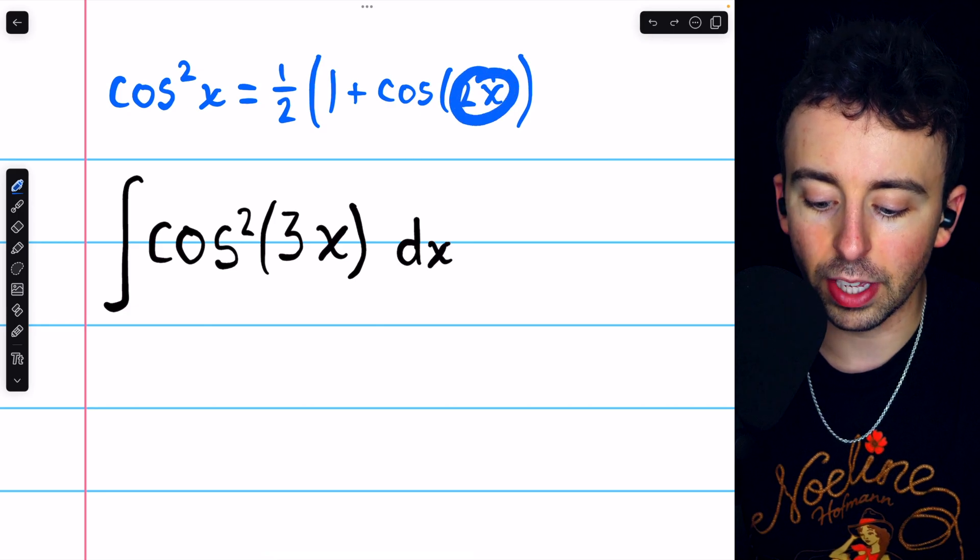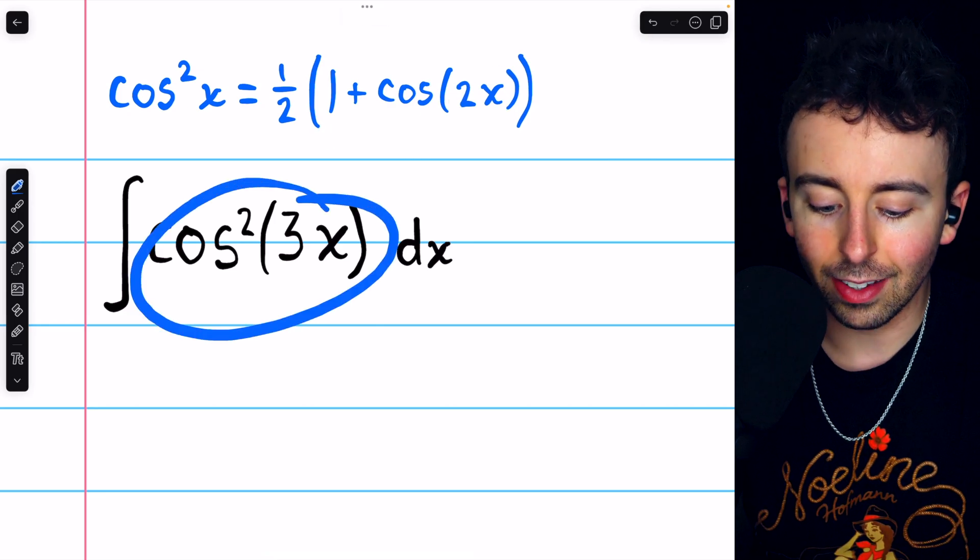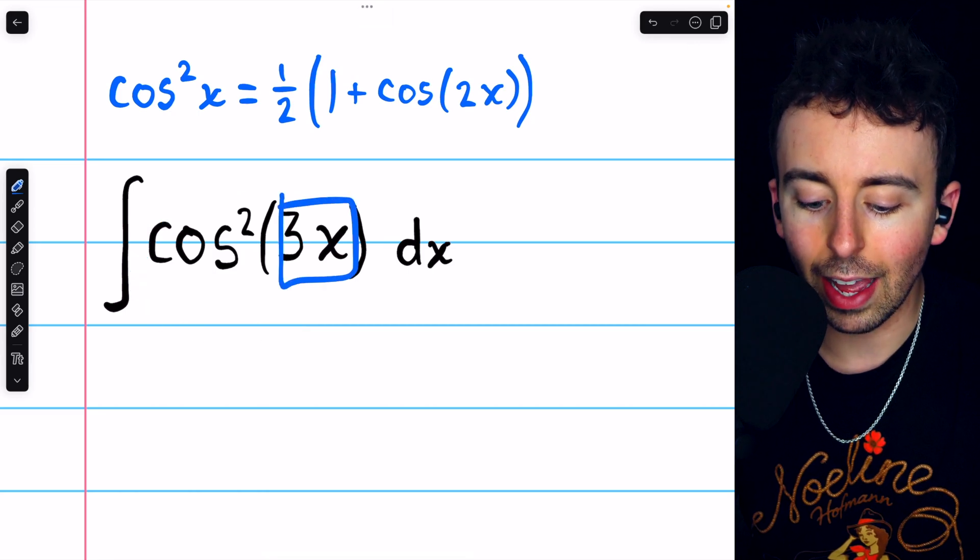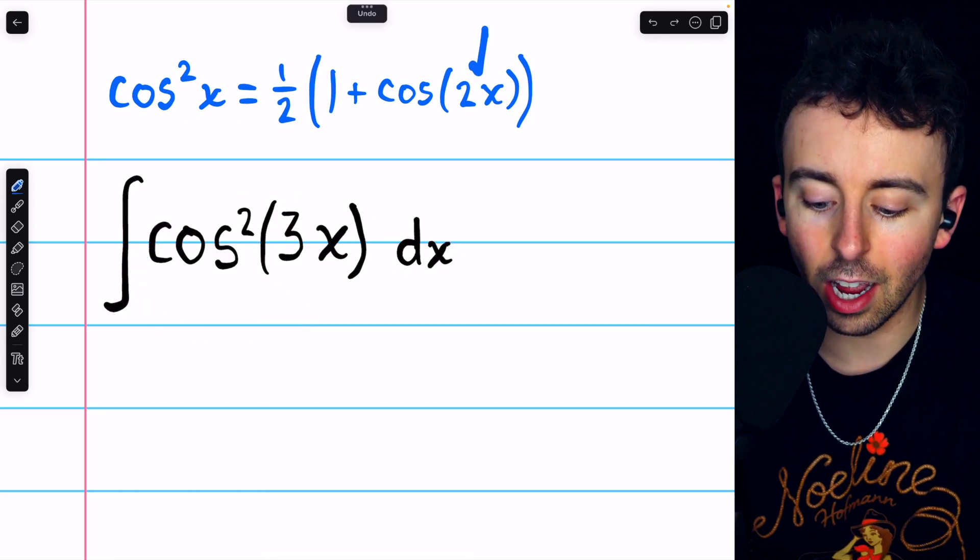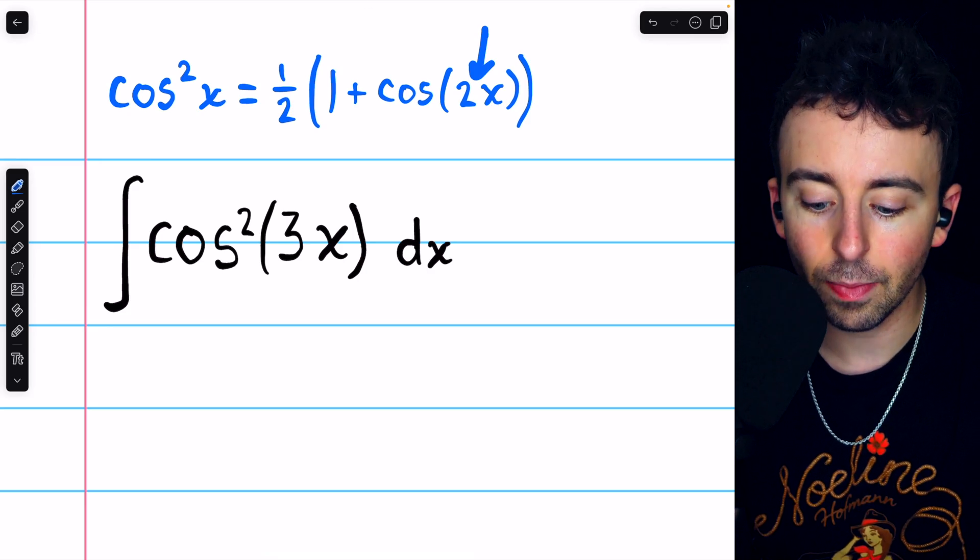However, we also need to double the input and do some of this other stuff. Note, in our case, the input is 3x. So when we apply this identity and double the input, our new input will be 6x.